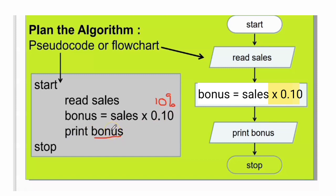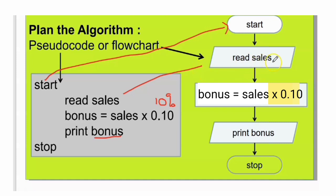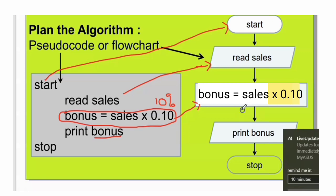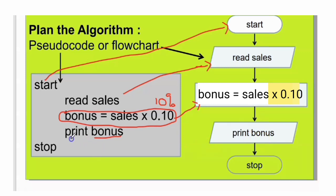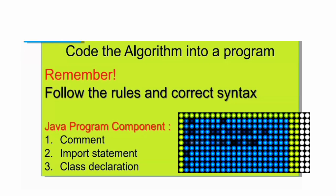To draw the flowchart, use a capsule shape and write 'start'. For input, use the parallelogram shape and write 'read sales'. For the process, use a rectangle shape and write the formula: bonus equals sales multiplied by 0.10. For the output, use a parallelogram shape and write 'print bonus' or 'display bonus'. Then end with a capsule shape for 'stop'. Make sure all arrows connect properly.